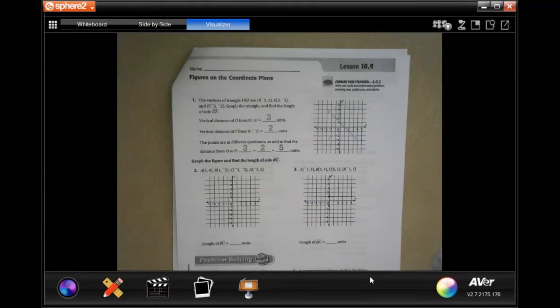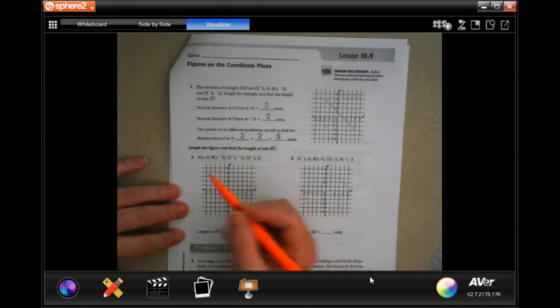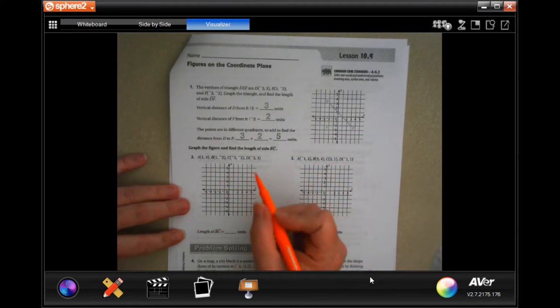Hey y'all, welcome to 6th grade, chapter 10, lesson 9. We're going to go ahead and get started with number 2. So it wants us to graph these first and then find the distance between B and C. Okay, so first I'm going to graph them really fast. I'm going to do that in an orange marker just so we can see them and get it done.